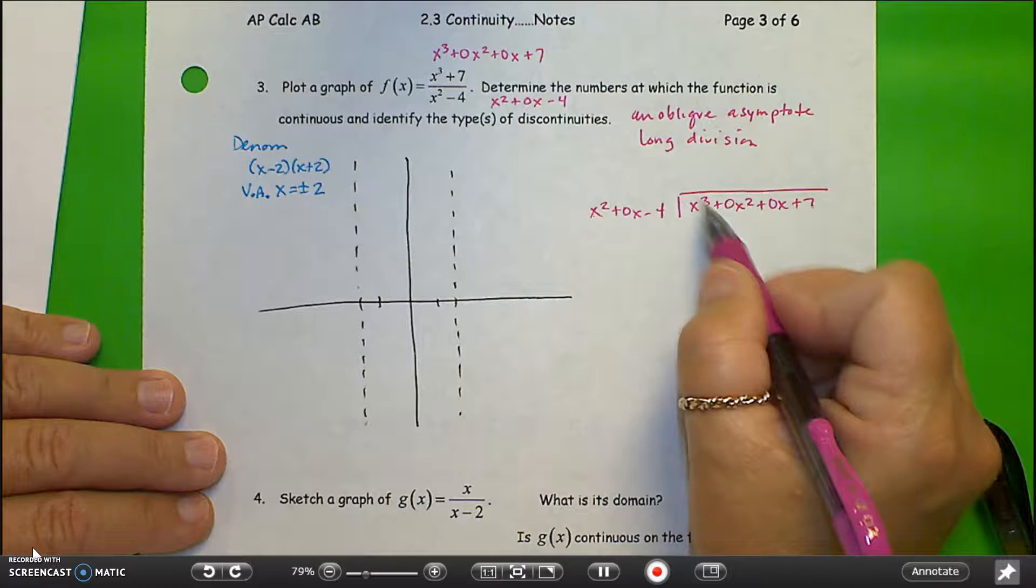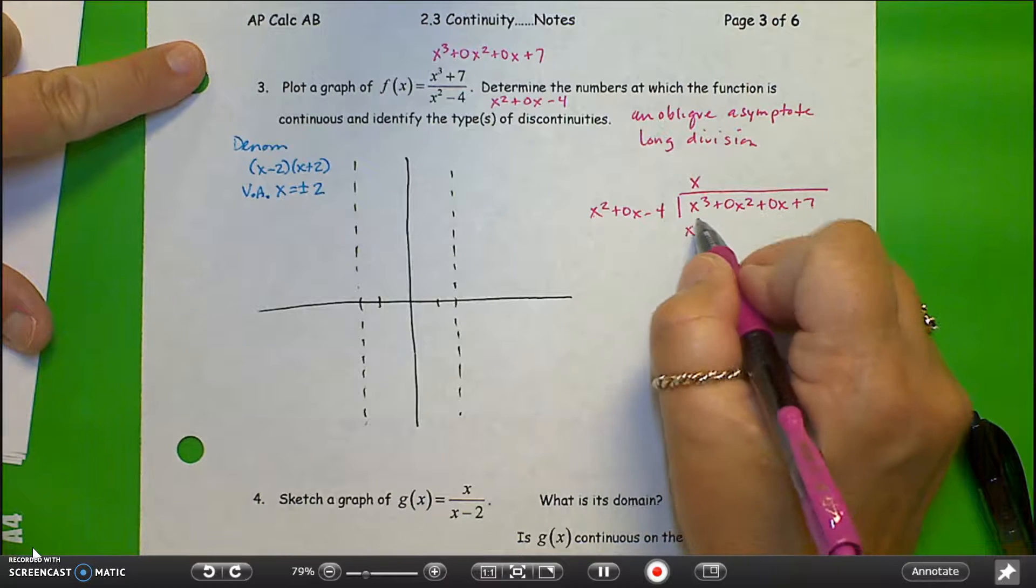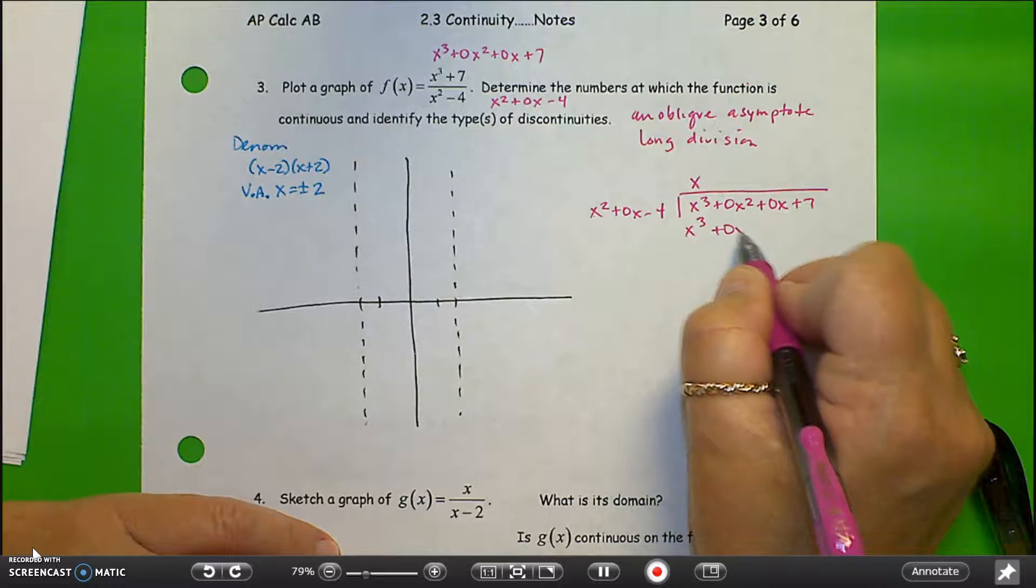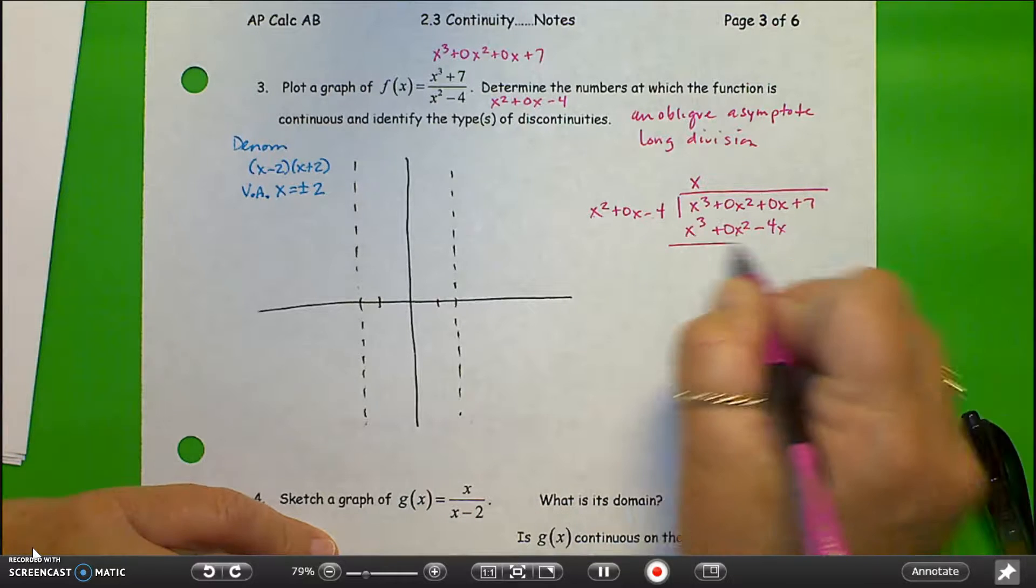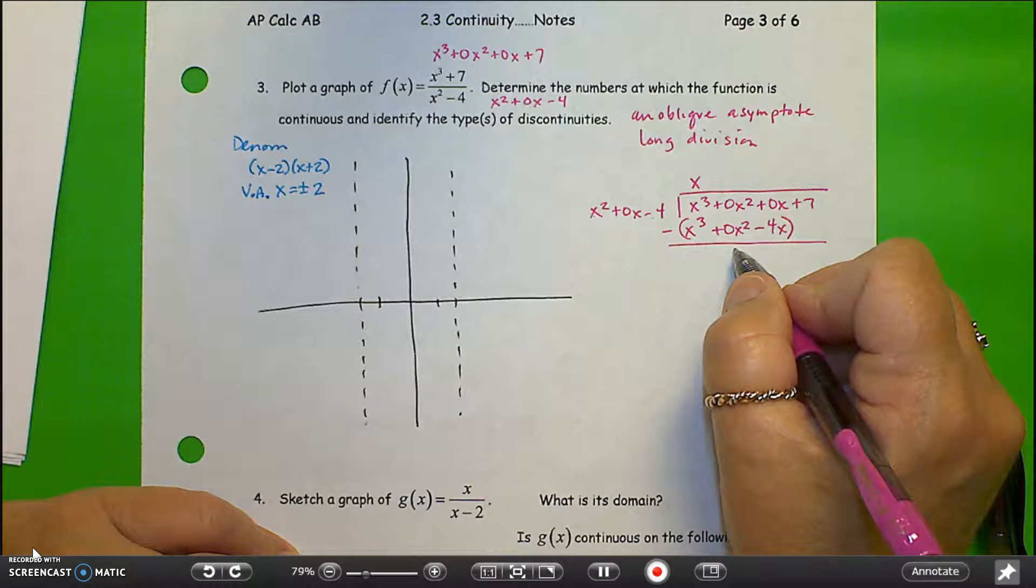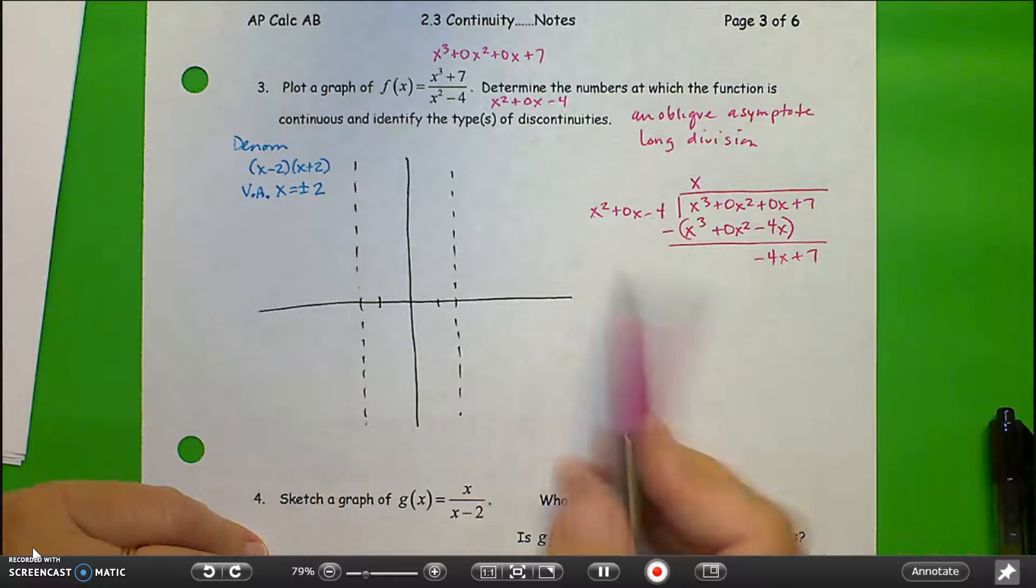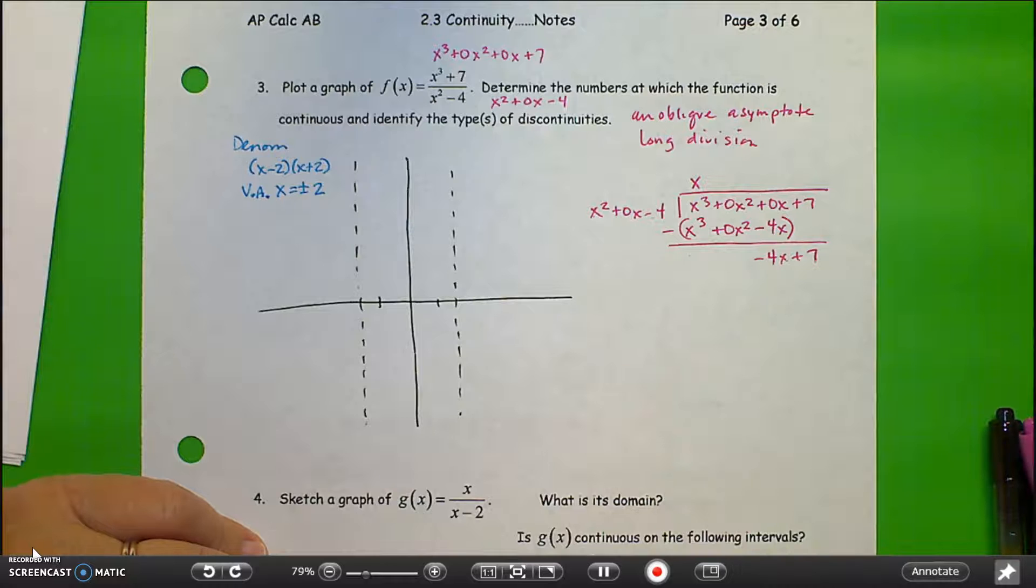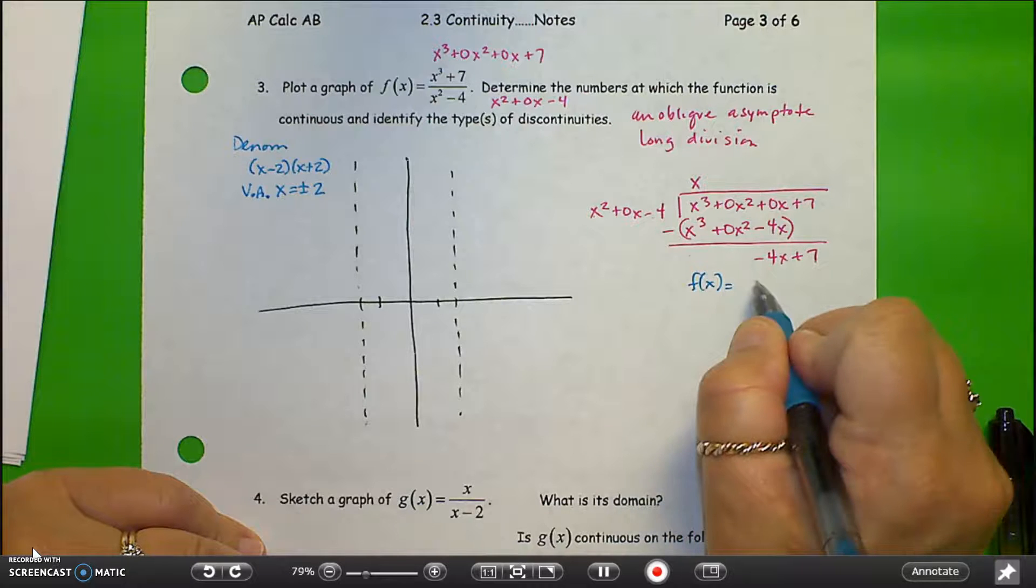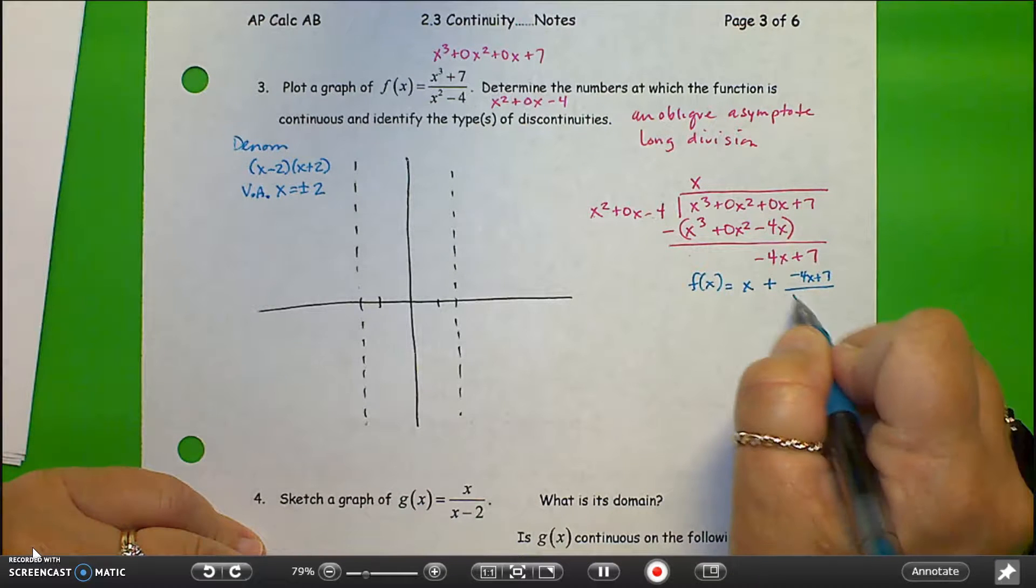x cubed plus 0x squared plus 0x plus 7 divided by x squared plus 0x minus 4. So x squared to get to x cubed, I need to multiply by x. Multiply that through here, I get x cubed plus 0x squared minus 4x. I'm going to subtract this entire piece here. That leaves nothing there, nothing there. I'm basically left with negative 4x plus 7. And x squared does not go into negative 4x, so this is my remainder.